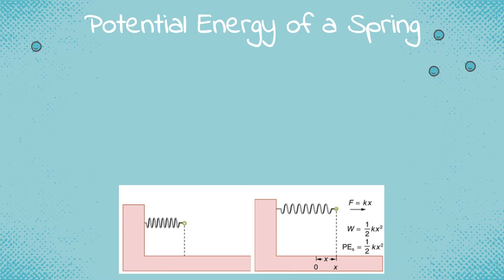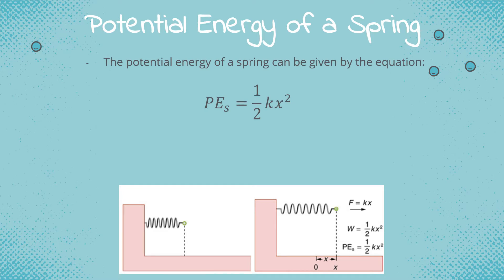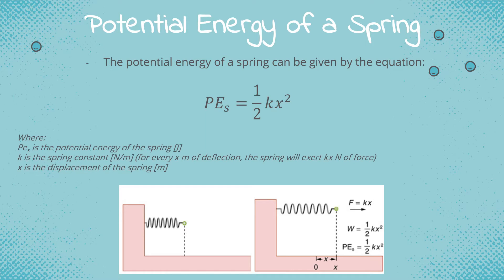The equation for the potential energy of a spring is: PeS = ½kx², where PeS is the spring potential energy, k is the spring constant, and x is the displacement of the spring. The force that a spring exerts is given by F = kx Newtons. So if we compress or elongate a spring by x meters, the force it exerts will be kx Newtons.